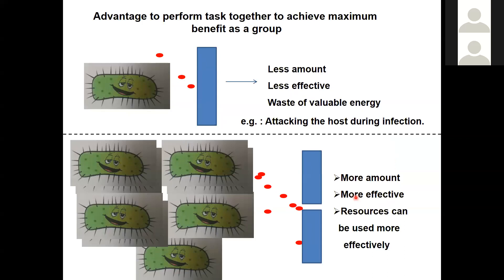Now in the second part of my talk: why do bacteria talk? Production of signaling molecules is energetically expensive, so why do they talk? This is depicted in a simplified cartoon — imagine a person firing a bullet to break a wall. The firing power of a single bullet is not enough to break the wall, but if many people fire together, there is a great chance the wall may break. Certain tasks, when done in unison, give more rewards and more benefits — just like breaking the wall.